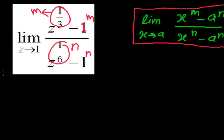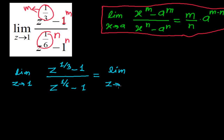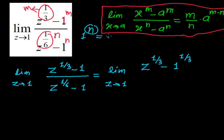Let me write the question: limit when z tends to 1, of z to the power 1/3 minus 1, whole divided by z to the power 1/6 minus 1. Further, I can write: limit when z tends to 1, of z to the power 1/3 minus 1 to the power 1/3, divided by z to the power 1/6 minus 1 to the power 1/6.